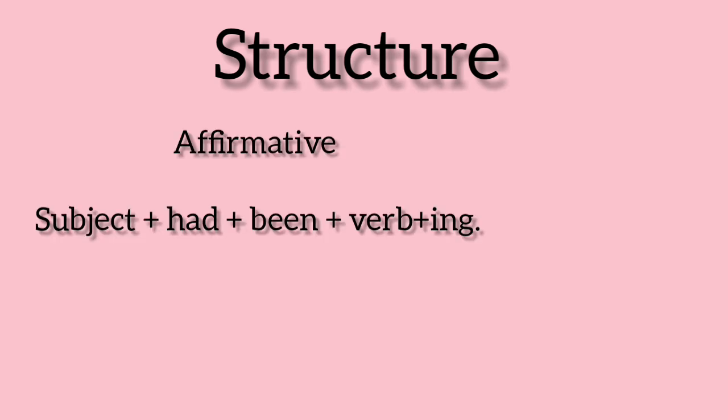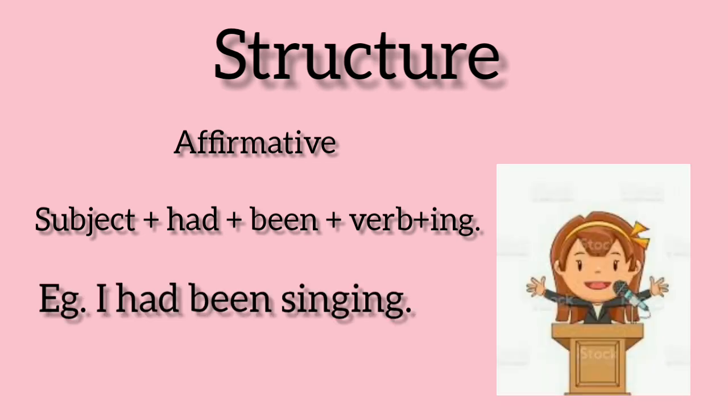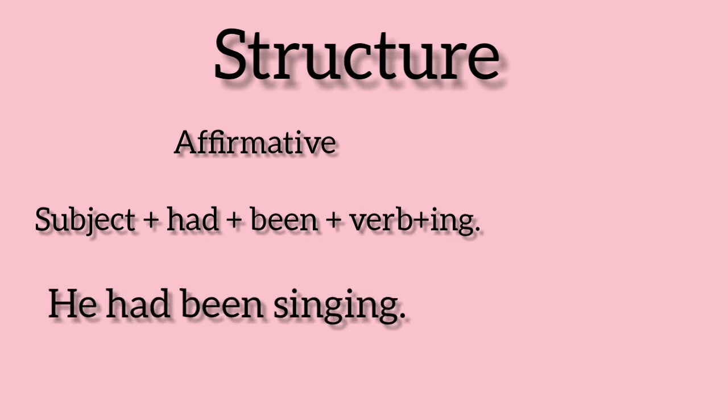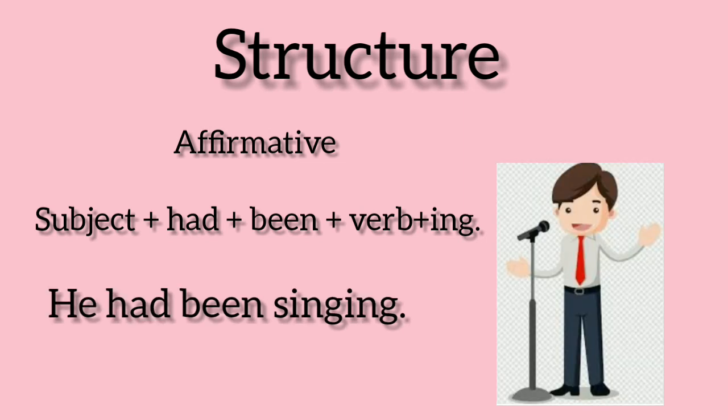The structure used to write affirmative sentences for past perfect continuous tense is: subject plus had been plus verb in the -ing form. For example: 'I had been singing,' 'You had been singing,' 'He had been singing.'